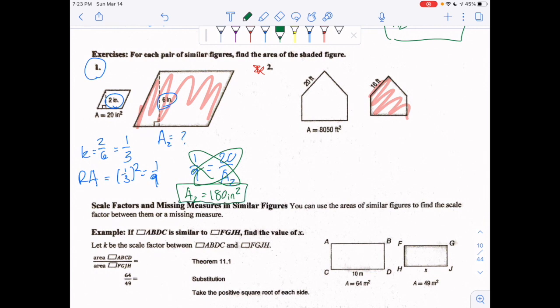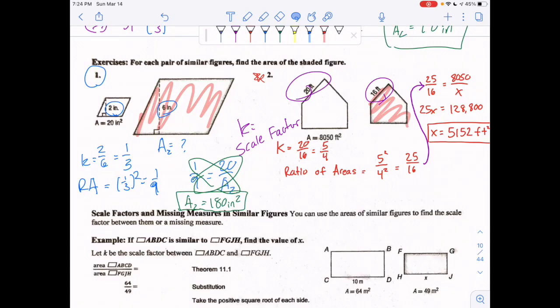Hit pause here. When you're good, try example 2 on your own and then we'll come back to check. Alright, let's check the answer for number 2. It is 5152 feet squared. To get that, I took my scale factor.